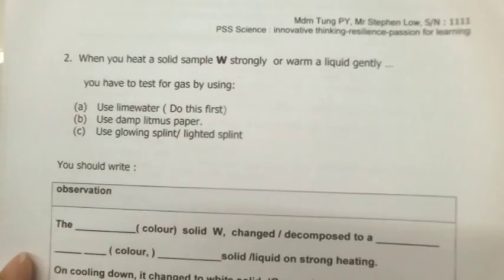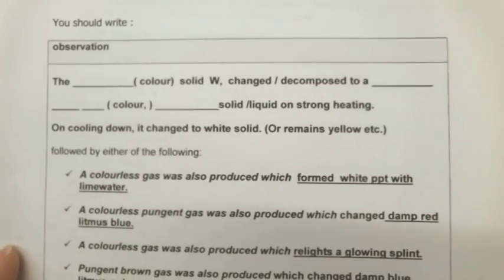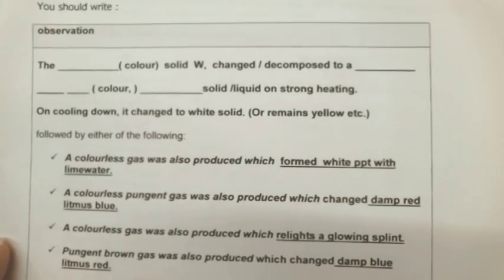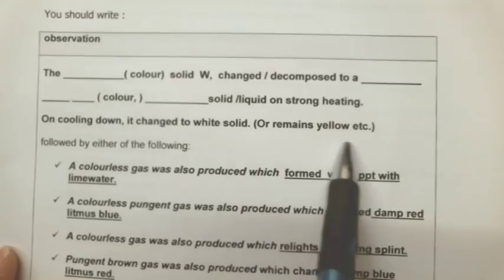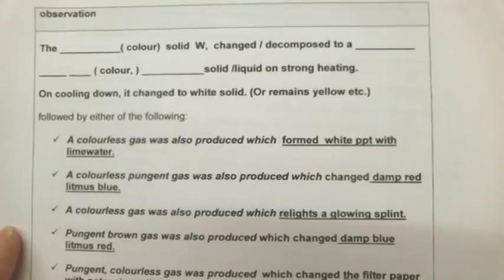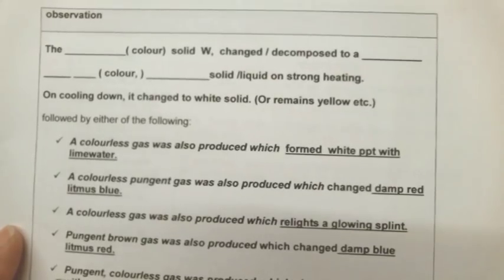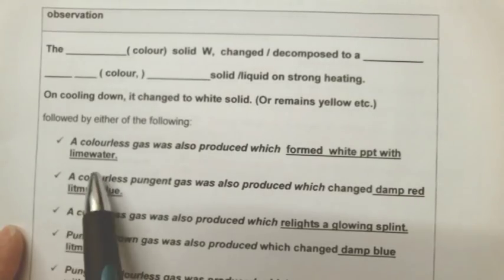So when you heat a solid W strongly, you have to test for the gas. And this is how you should write for your observation. Please refer to page 6 of the FAQ. You are also supposed to test for gas when you heat something strongly. And I have told everyone in the class that the first gas you should test for is carbon dioxide.